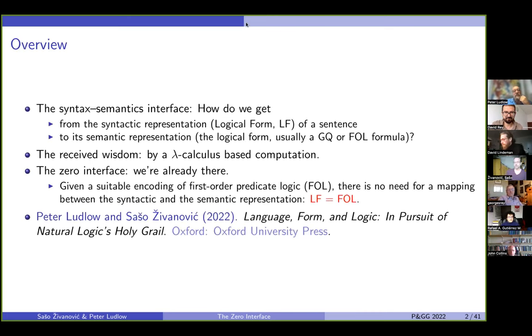So what we want to talk about today is about the syntax-semantics interface. So the question here is how do we get from the syntactic representation, typically this would be the logical form, to the semantic representation, which is either a first-order logic or even more usually a generalized quantifier's formula. And now the received wisdom is that there is a computation involved here, and this computation is implemented by lambda calculus. Now we will actually present a different thesis, and that is that there's actually nothing to do, we're already there once we have our syntactic representation, so we have the zero interface.